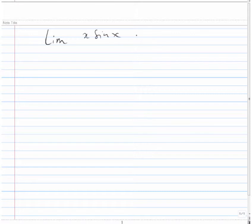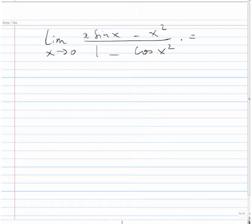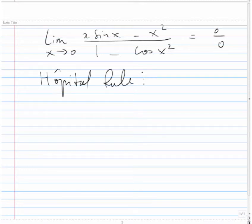Let's start with the first limit. It is the limit of x·sin(x) minus x² over cos(x²) when x goes to 0. Knowing that sin(0) is 0 and cos(0) is 1, this will go to 0 over 0. Therefore, we are forced to use L'Hôpital's Rule, meaning we are going to take the derivative of the top over the derivative of the bottom. Taking the derivative of the fraction would be wrong.